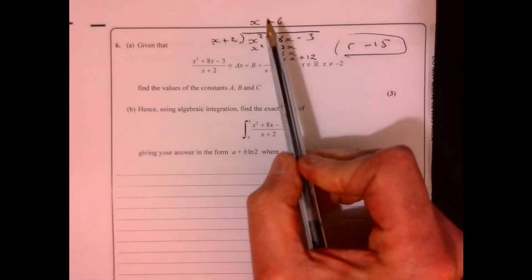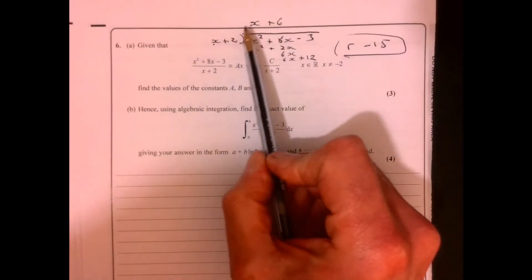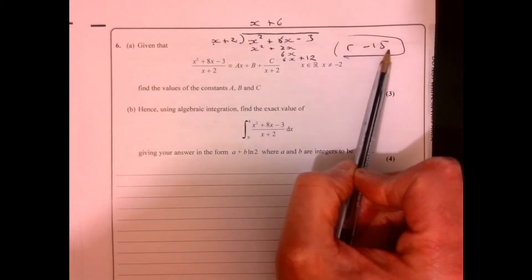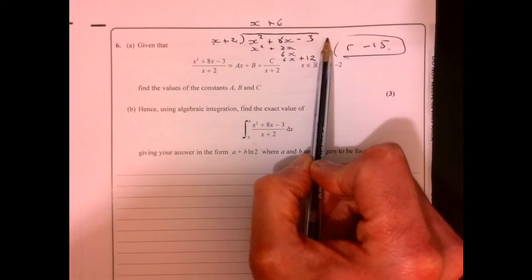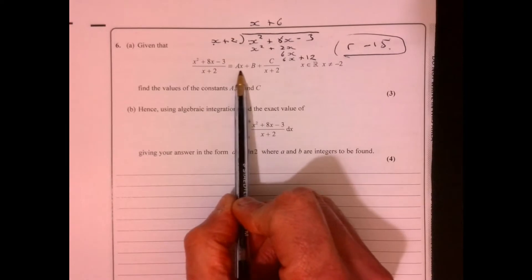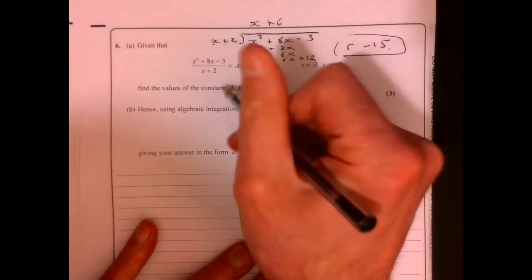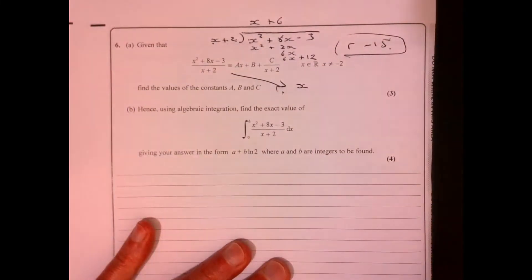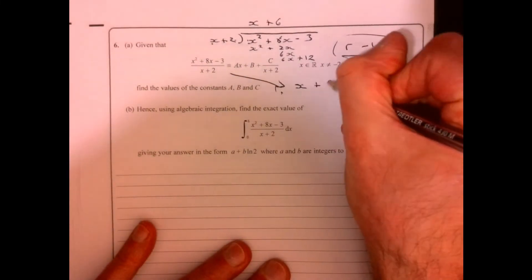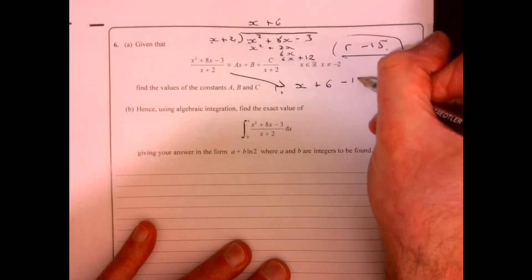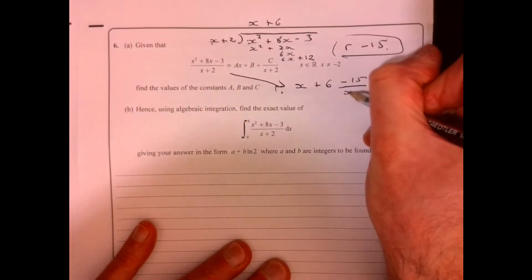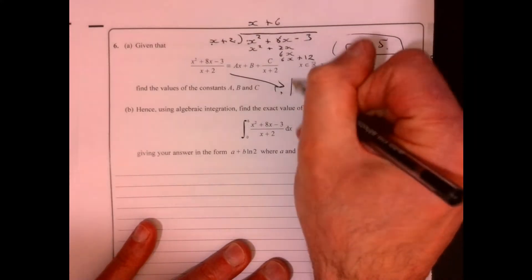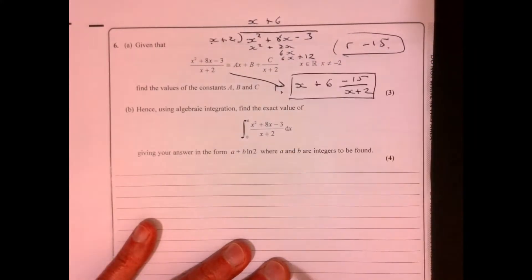What does that mean? It means that this times this minus this equals this figure here. How does it correspond to this bit here? It means that we've got a is x plus 6, and then we've got minus 15 over x plus 2. That's the first part of the question.